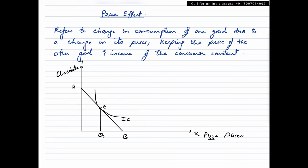So when we talk about price effect, what is price effect? Price effect would refer to change in consumption of one good due to a change in its price, keeping the price of other good and the income of consumer constant, or we could say ceteris paribus. Any change in consumption that occurs in one good whenever the price of that particular good changes. Now, how do we locate price effect on a diagram? Let's take a look at that.